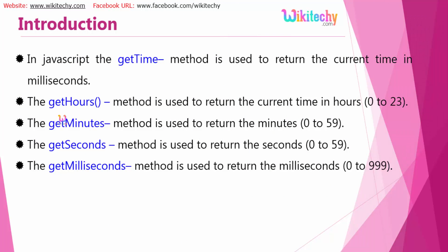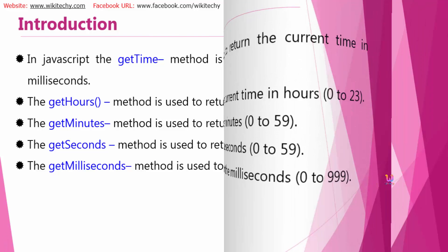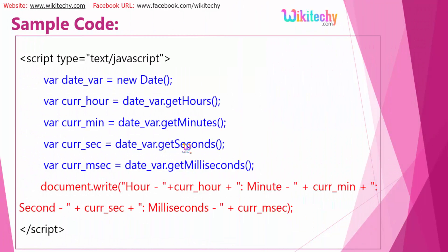In JavaScript, the getTime method is used to return the current time in milliseconds. The getHours method is used to return the current hour from 0 to 23, getMinutes returns minutes 0 to 59, getSeconds returns seconds 0 to 59, and getMilliseconds returns 0 to 999.